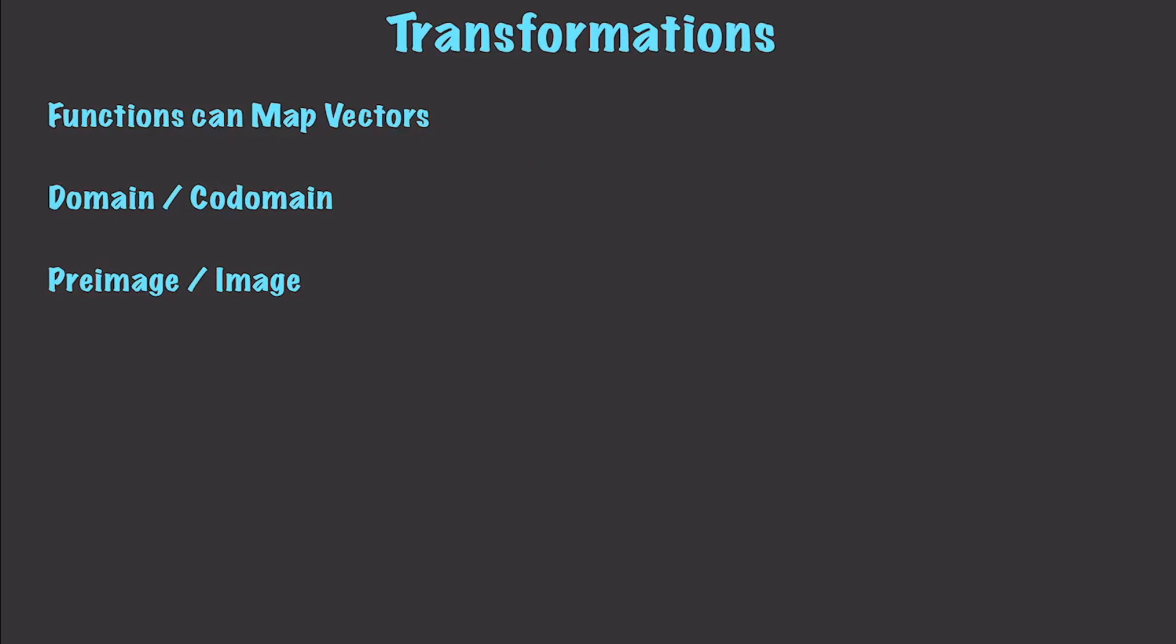So as you see, functions can also map vectors. So we can have our function here which is going to receive our vector values, and remember this means maps to, and then we could basically perform any calculations that we would want to get us a new vector. And when using vectors, we refer to these functions as transformations, and it is best to use a T instead of an F to represent them, of course.